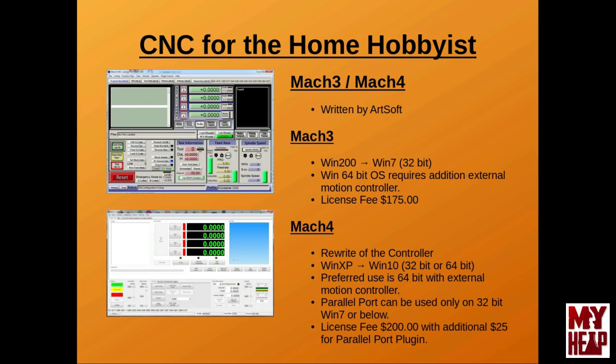Mach 3 and Mach 4 are written by Artsoft. Mach 3 runs on Microsoft Windows 2000 through Windows 7, 32-bit only, and has a licensing fee of $175. For 64-bit Windows OS's and Windows 8, an external motion device is required, as accessing the parallel port on newer OS's is almost technically not possible. Mach 4 is a rewrite of the software and will run on 32 or 64-bit Windows XP through Windows 10. The preferred usage is with an external motion controller, but it can be used with a parallel port on Windows 7 or below with a 32-bit OS. The Mach 4 hobby license is $200, and the parallel port plug-in is an additional $25.